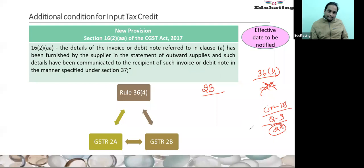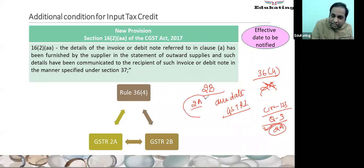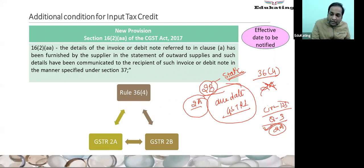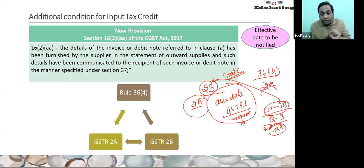Because 2A is a dynamic document updated every time, there was a requirement to have one static document not going to be updated after the due date. Therefore, we can say even Circular 123 is somehow talking about 2B, but because 2B was not there at that point of time, the reference was made to 2A. But again, they were saying it should be taken based on the due date of GSTR 1.